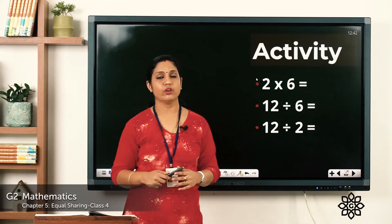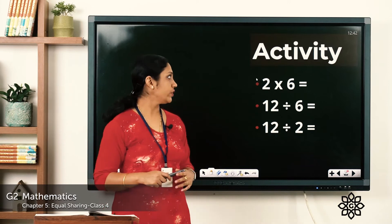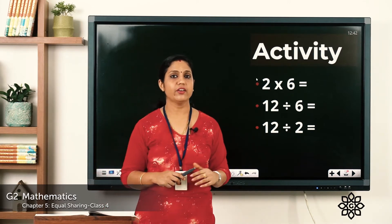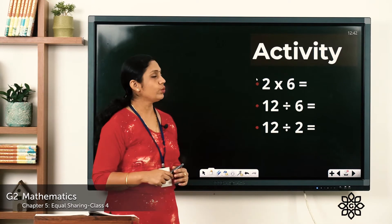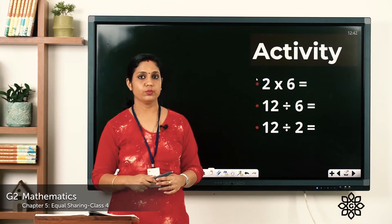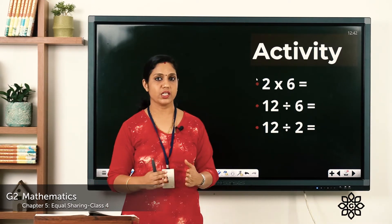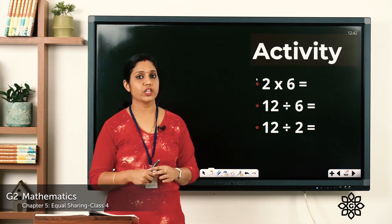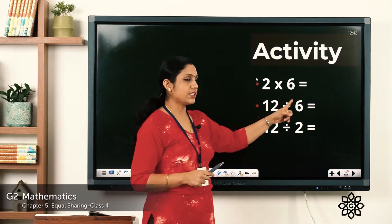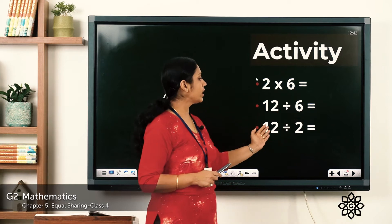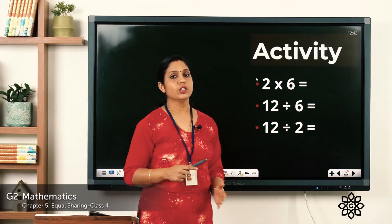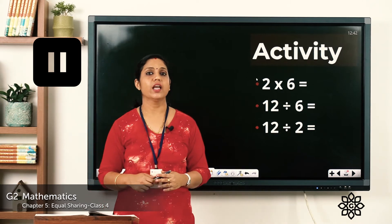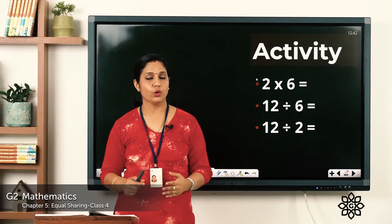This is an activity for you. Take out your notebook and write this activity — first write the date, then the question: 2 into 6 is equal to — find the answer. After that, write the division form: 12 divided by 6 is equal to, and 12 divided by 2 is equal to. Pause the video, write down the questions, and do the answers.